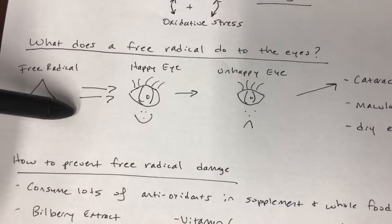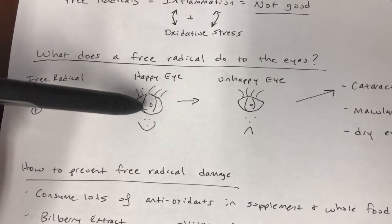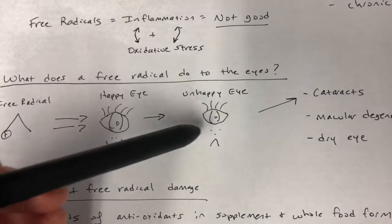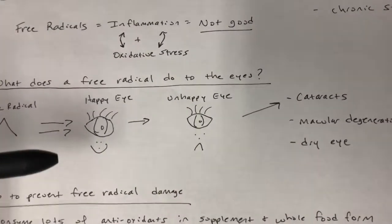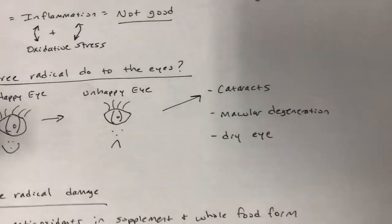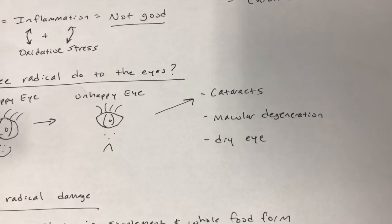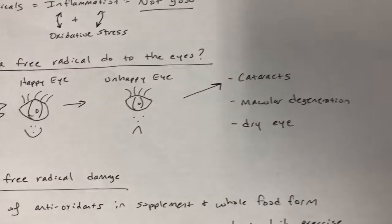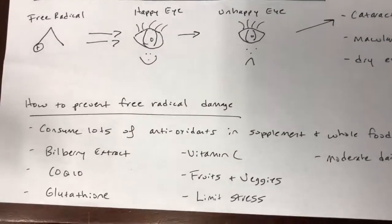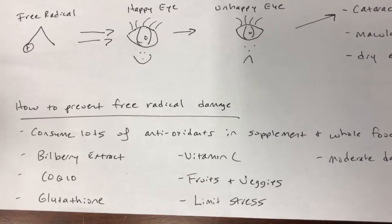Now let's talk about what exactly a free radical does to your eyes. The free radical attaches to the healthy tissue in your eyes and makes your eye very unhappy. Free radicals can cause things like cataracts, macular degeneration, and dry eye, and a lot of other problems that can go on with your eyes. So how exactly do you prevent free radical damage?